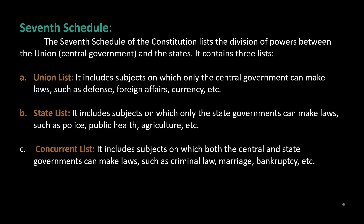7th Schedule: The 7th Schedule of the Constitution lists the division of powers between the union, i.e., central government, and the states. It contains three lists. Union List: It includes subjects on which only the central government can make laws, such as defense, foreign affairs, currency, etc.